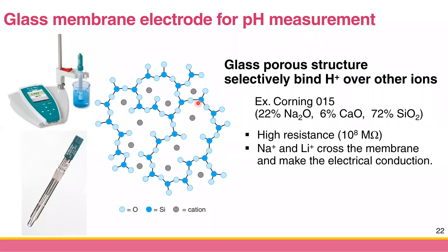Most of it is silicon, with some sodium and calcium. The glass membrane has high resistance — because in potentiometry you want a constant potential, and high resistance prevents current from shifting your potential result. They also dope sodium ion and lithium ion into the glass membrane to provide electrical conduction, because although you need high resistance, you still need some electrical connection to make a complete circuit.